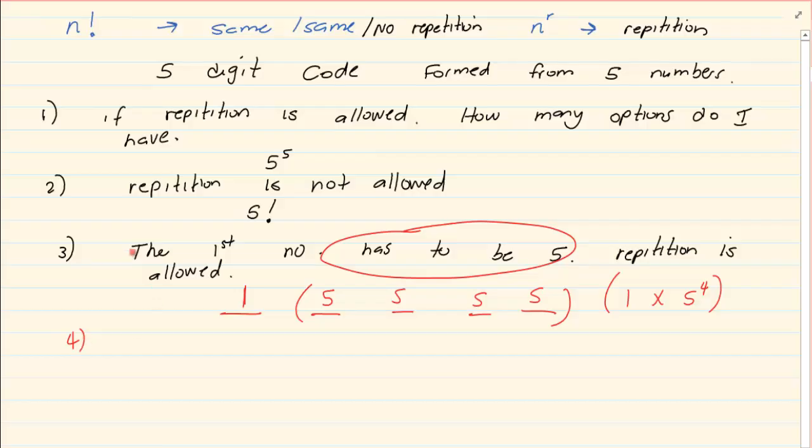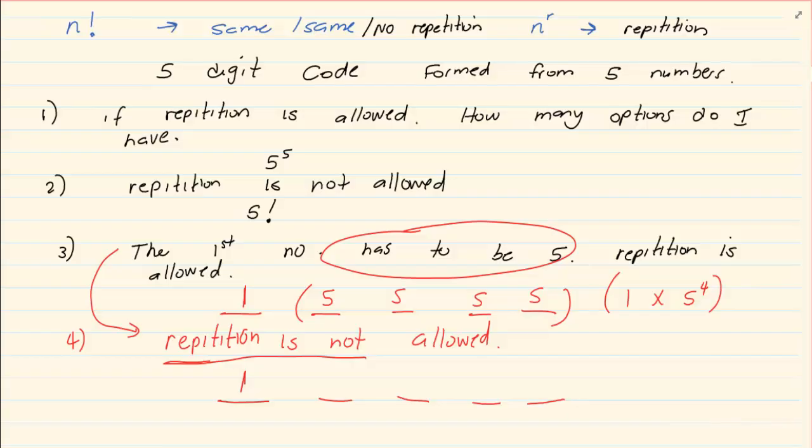What if I said that we are doing the exact same question but repetition is not allowed. Now if the first number is five we only have one option. But look at the next one. You cannot tell me it's five, four, three, two. Why? You have already used five and repetition is not allowed. So if you have already used five then that means it's four times three times two times one. Can you see? So what was the answer for this one? It was four factorial. One times four factorial which gives you four factorial.